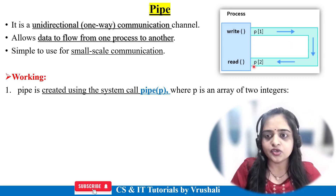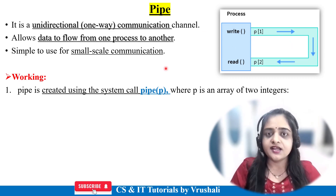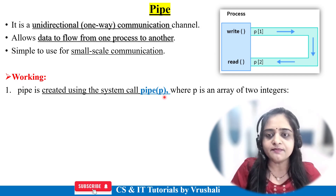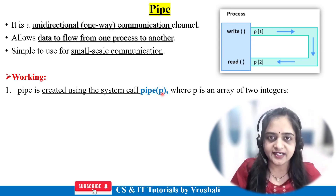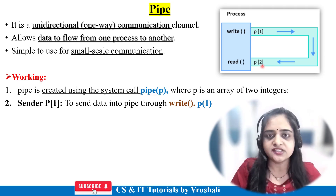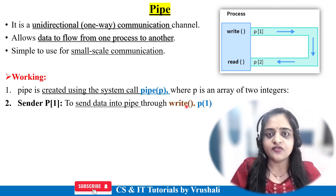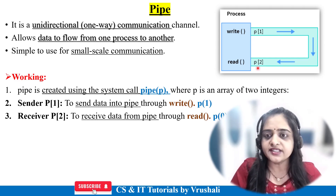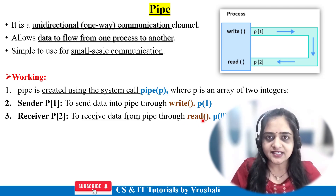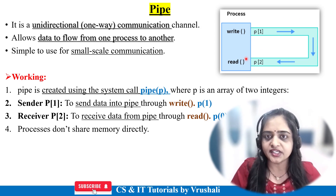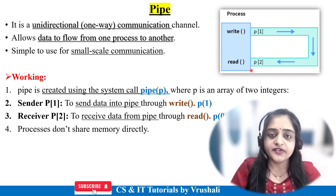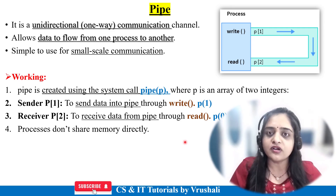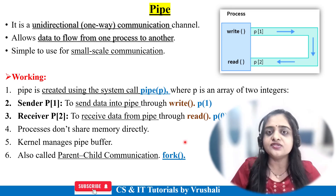Suppose Process 1 wants to send a message to Process 2 using the pipe IPC mechanism. The operating system first creates the pipe or buffer between Process 1 and Process 2 using the system call pipe(P), where P works like an array of two integers. Process 1 is the sender and Process 2 is the receiver. Process 1 sends data using the write function, and Process 2 reads data using the read function. The kernel manages this complete one-way communication and buffer, which is also called parent-child communication — that's why the fork function is used.